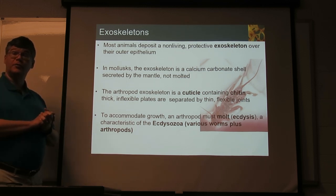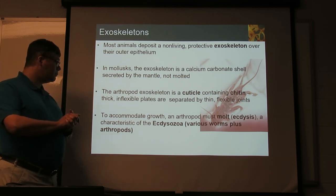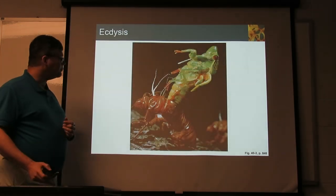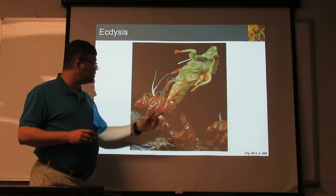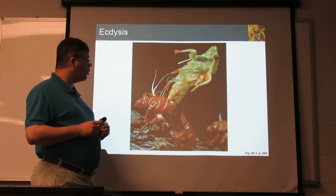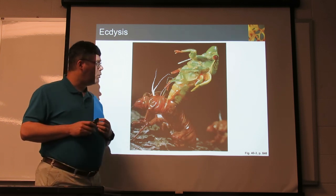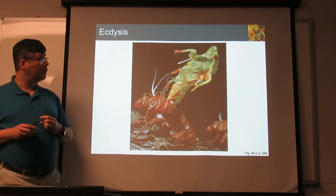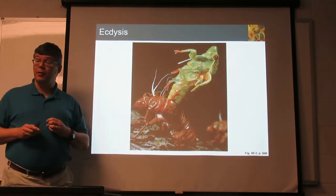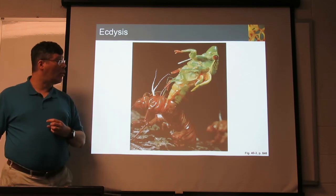Arthropods and their relatives molt this outer skeleton from time to time, associated with growth. Here's an example — this is a sequina molting. The adult is emerging out of the old larval skin, and then it will be ready to expand those wings and be ready for its adult stage, which it couldn't do inside the old exoskeleton.